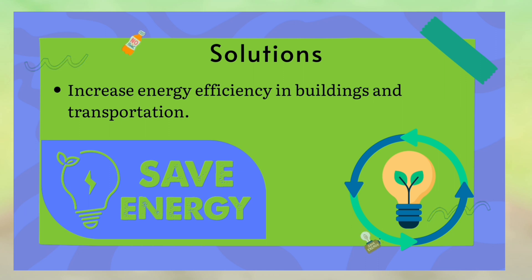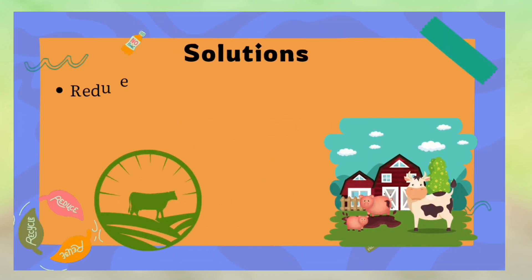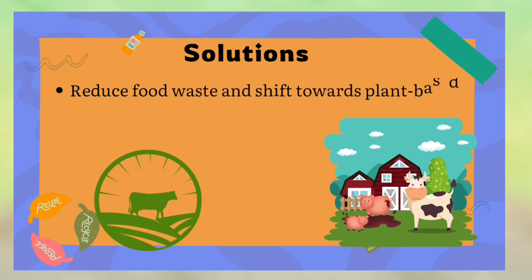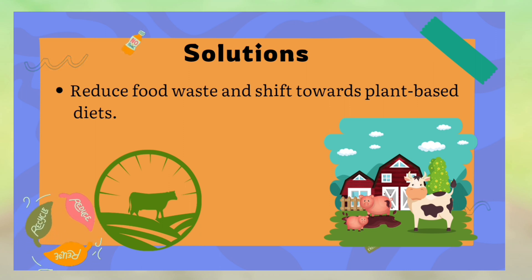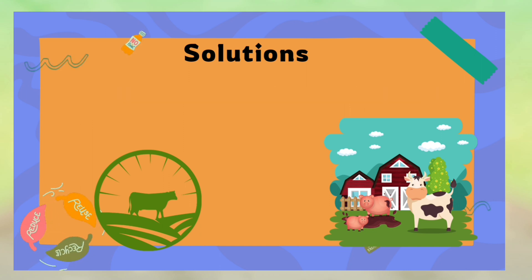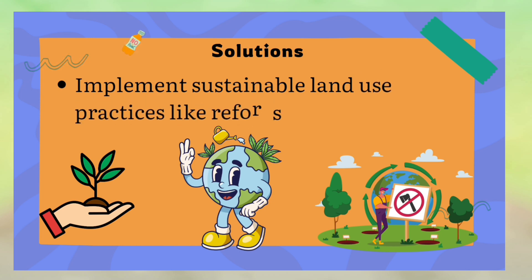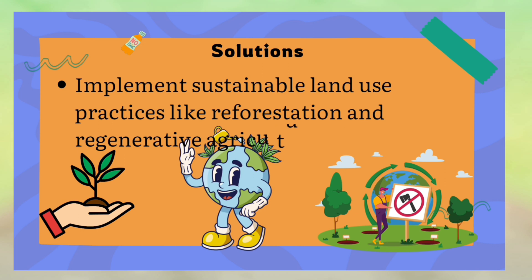The world's roads are clogged with vehicles, most of them burning diesel and petrol. Reduce food waste and shift toward plant-based diets — eating more vegetable foods and whole grains.